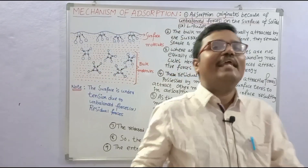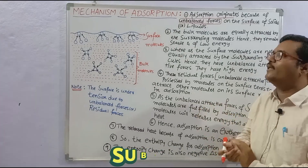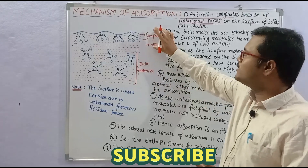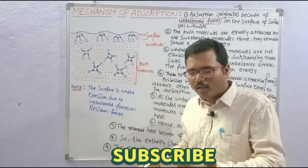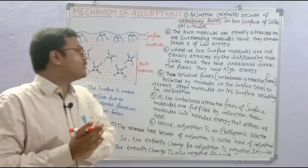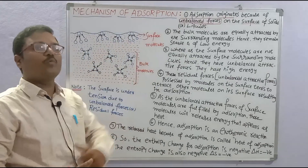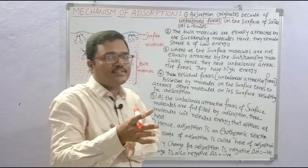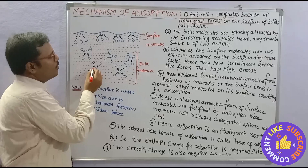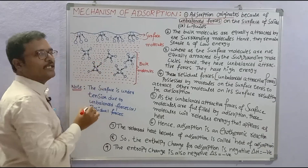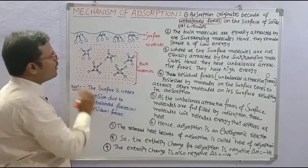Why do these unbalanced forces exist? Why are unbalanced forces only at the surface and not in the bulk? The answer is: the molecules in the bulk have attraction forces between them from all directions. In the bulk, a molecule at the center is attracted by 4 other molecules equally.